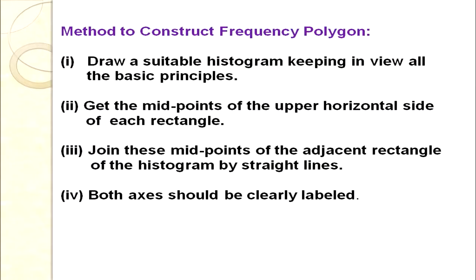Construction steps for frequency polygon: first, draw the histogram following all basic principles. Second, get the mid-points of the upper horizontal side of each rectangle. Third, join these mid-points of adjacent rectangles by straight lines using a scale. Fourth, ensure both axes are clearly labelled.